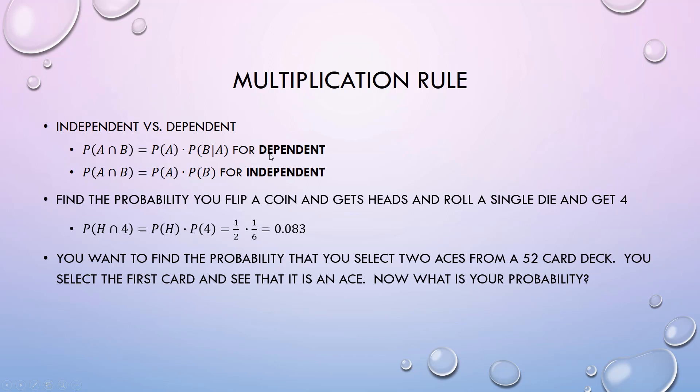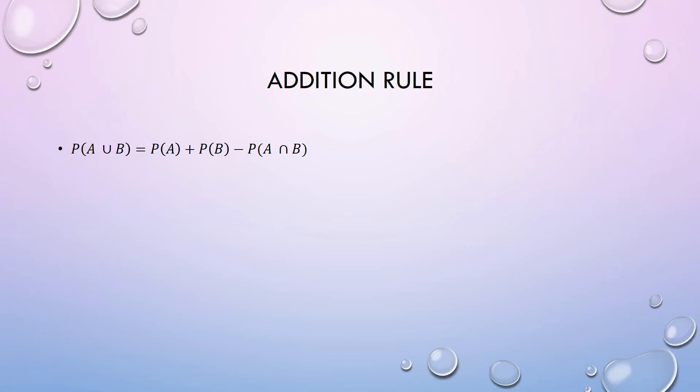That changes our probability a little bit. Probability the first is an ace - well, there's four aces out of a 52-card deck. Now the second: what's the probability the second one's an ace given the first is an ace? There's only three aces left and there's only 51 cards left.